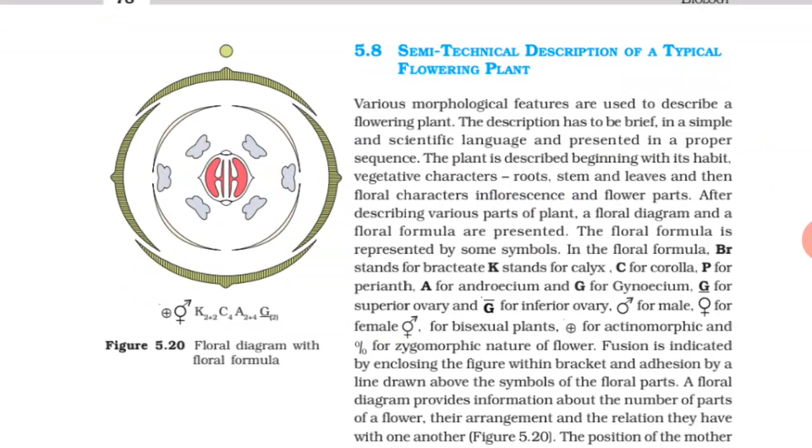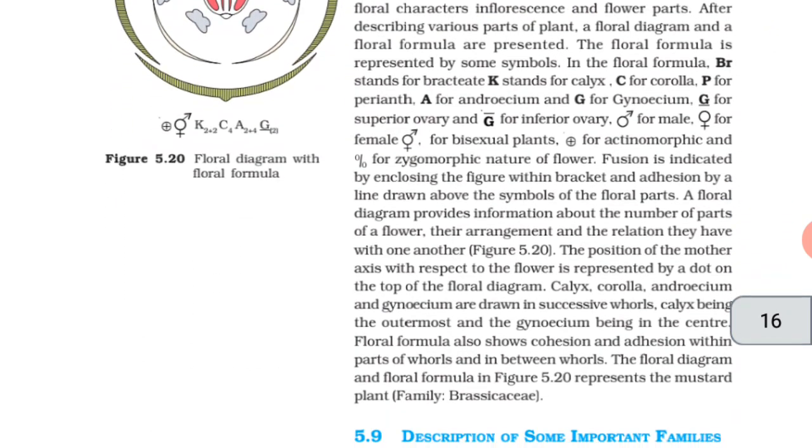The floral formula is represented by some symbols. In the floral formula, Br stands for bracteate, K stands for calyx and C for corolla, P for perianth, A for androecium and G for gynoecium. G with underline for superior ovary and upper bar of G for inferior ovary. Male sign and female sign for bisexual plants, plus sign in a circle for actinomorphic and the percent sign for zygomorphic nature of flower. Fusion is indicated by enclosing the figure within brackets and adhesion by a line drawn above the symbols of the floral parts.